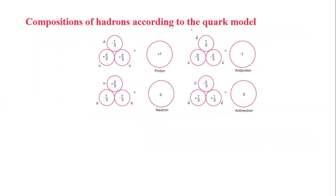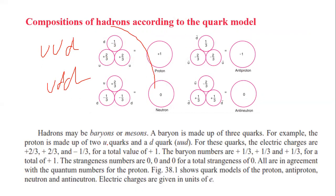Now, the composition of hadrons according to the quark model. If you have a proton, you can see that composition. If you have a neutron, you can see that composition. Proton is UUD, that is proton. UDD is neutron. Now, if you have an antiparticle, you can see that, with sign change. That's how we are getting antiproton and antineutron.